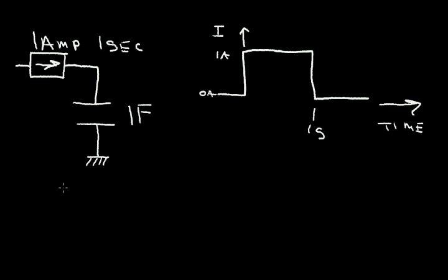Now we know that the charge in the capacitor is equal to the capacitance, which in this case is 1 farad, times the voltage across the capacitor. So solving for voltage, we can say the voltage is equal to the charge divided by the capacitance.